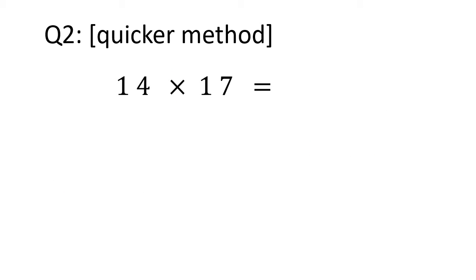Now let's see the next question: 14 times 17. This is a two-digit multiplication whose tens digits are 1, so we can use the quicker method. First, we need to find the product of ones digits, 4 times 7, which is 28. Then add 100, which makes 128.